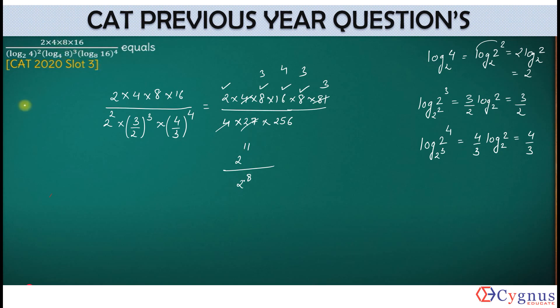So effectively, we are left with how much? 2 to the power 11 divided by 2 to the power 8, which is equal to 2 to the power 3. So 2 to the power 3 will give you how much? 8.